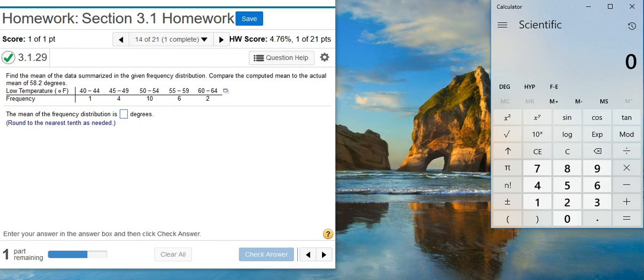Here's our problem statement. Find the mean of the data summarized in the given frequency distribution. Compare the computed mean to the actual mean of 58.2 degrees.